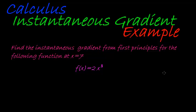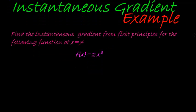So here we have an example of instantaneous gradient. Find the instantaneous gradient from first principles for the following function at x equal to 7.